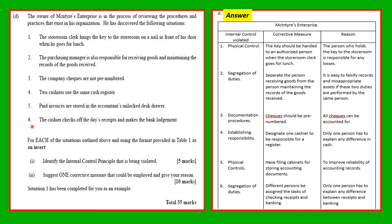Situation six: the cashier checks off the day's receipts and makes the bank lodgment. Again, segregation of duties has been violated. Different persons should be assigned the tasks of checking receipts and banking, so that only one person has to explain any difference between receipts and banking. That brings us to the end of this presentation — hope it was helpful.